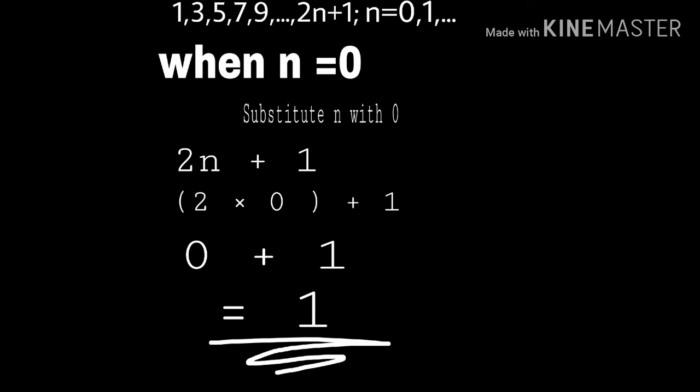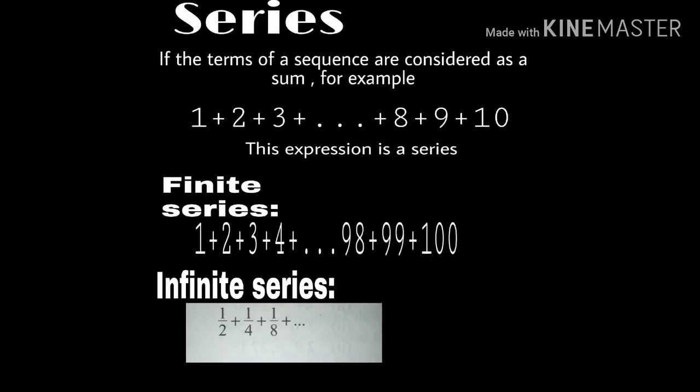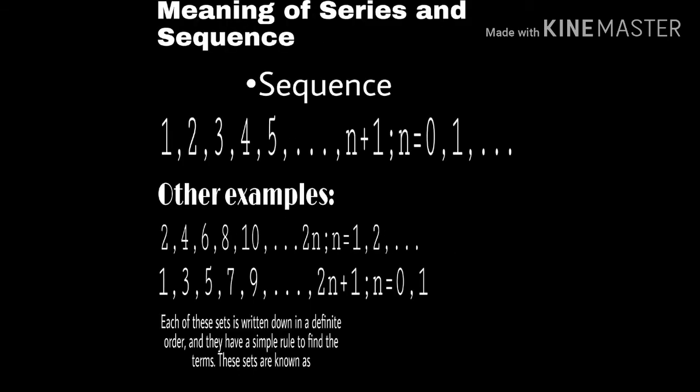It's not the numbers in the question, but like your normal numbers: 1, 2, 3, 4, 5. You know the first number is 1, second number is 2, third number is 3. That is just a simple rule for finding sequences. Each of these sets is written down in a definite order, and they have a simple rule to find their terms.